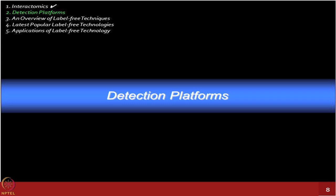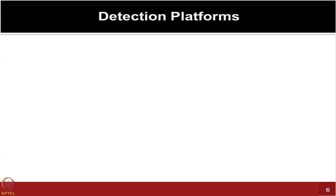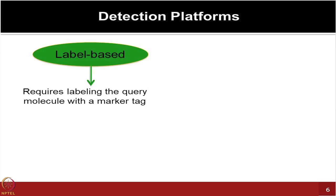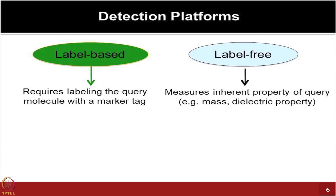Let us talk about detection platforms and their comparisons. You want to detect the signal after doing the assay, and that is where you know whether your experiment has worked or not. You need robust detection platforms. Either you use some sort of label — measured with fluorescence, chemiluminescence, or radioactivity — or you use a label-free approach, because whenever you label a protein, you are adding something from outside that can affect overall structure, overall binding, and may result in certain artifacts.